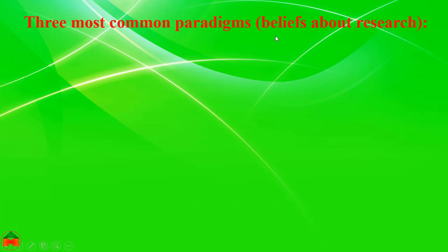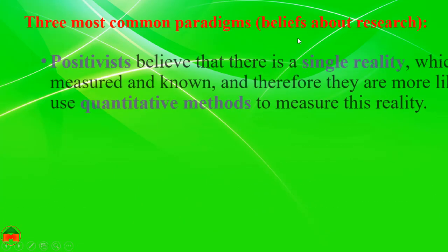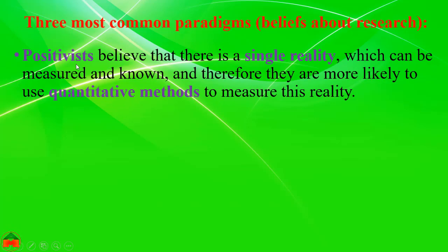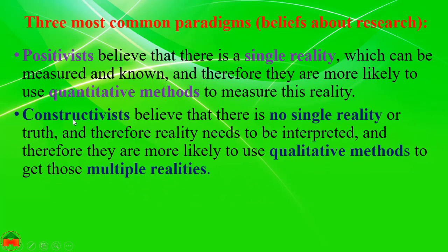There are three most common paradigms or beliefs about research. Positivists believe that there is a single reality which can be measured and known, and therefore they are more likely to use quantitative methods to measure this reality. The positivist belief is that there is a single reality and that reality can be measured by quantitative methods.